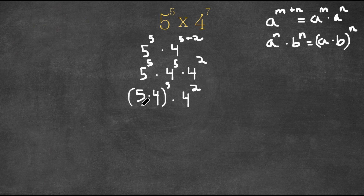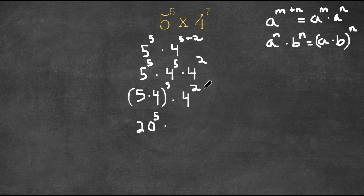Now 5 times 4 is 20, so now we have 20 to the power of 5 times 4 squared.